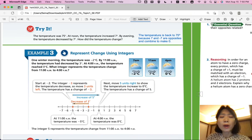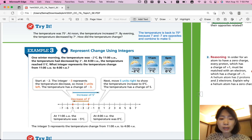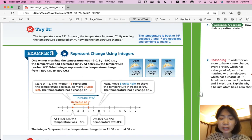Example 3. Represent change using integers. One winter morning, the temperature was negative 2 degrees Celsius. By 11 a.m., the temperature had decreased by 3 degrees. And at 4 p.m., the temperature reached 0 degrees. What integer represents the temperature change from 11 a.m. to 4 p.m.? So starting from negative 2, it decreases by 3, and then it increases from here to 0. So from the original negative 2 to 0, what is the temperature change?